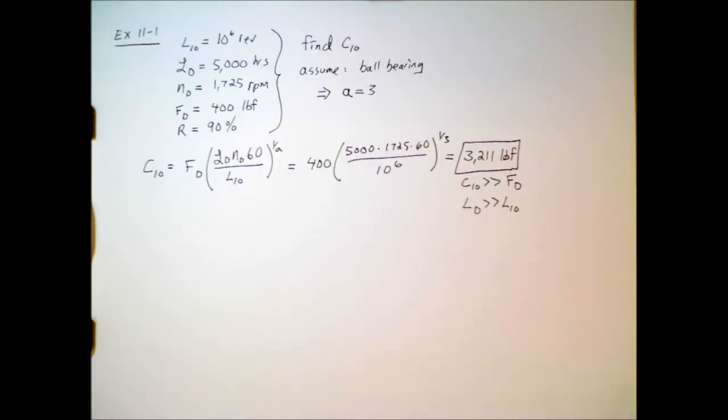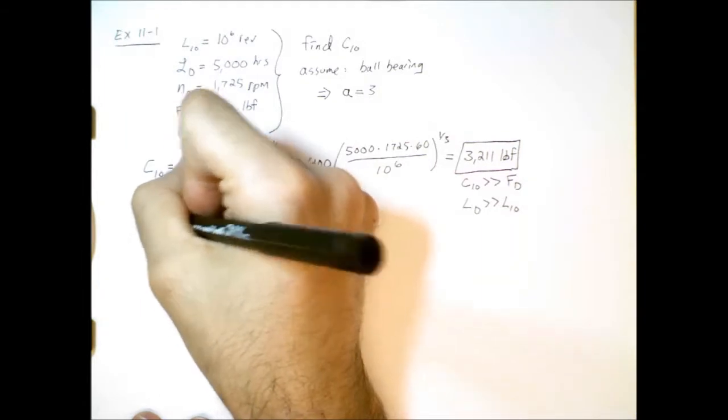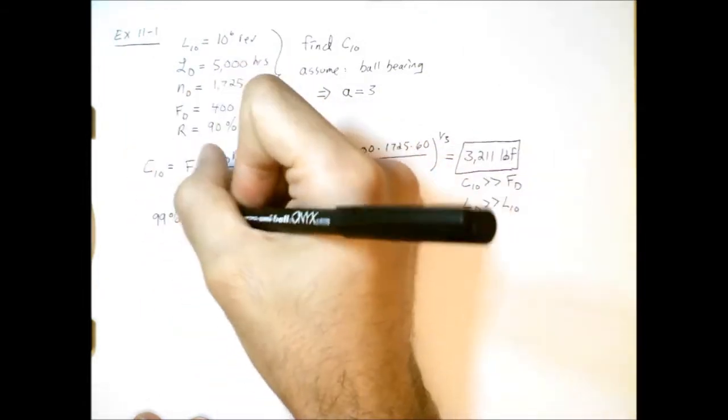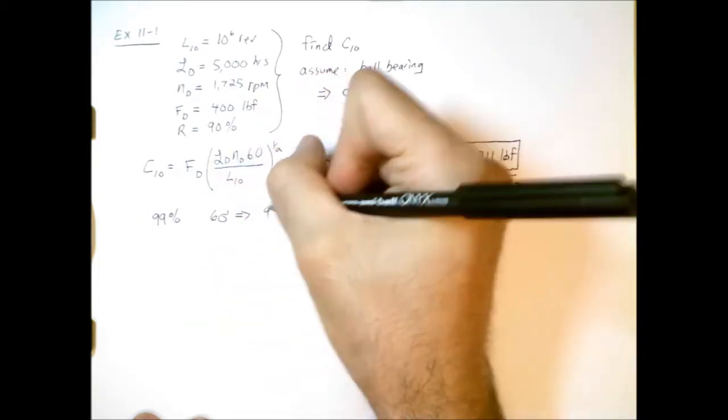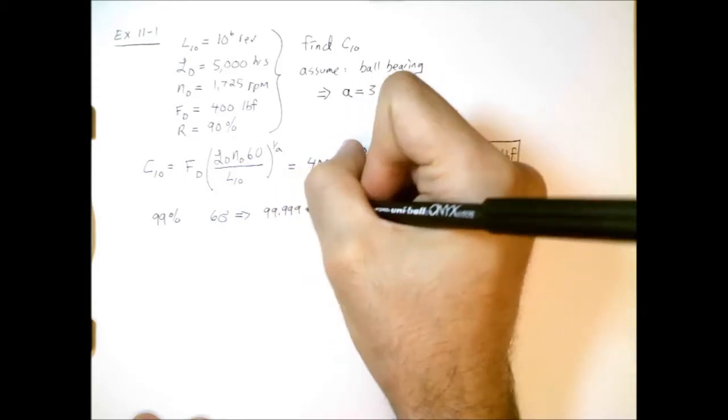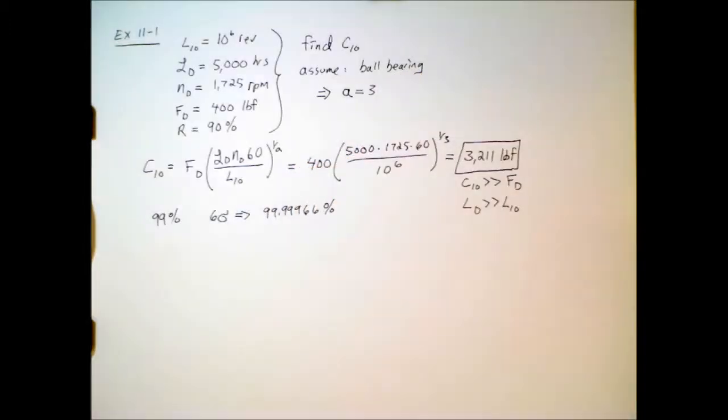In many cases we need a reliability value that's different from 90%. Maybe we want a 99% reliability value, or maybe we want 6 sigma reliability, which corresponds to 99.9966% reliability. We're going to go through an approach for converting between 90% reliability and other values of reliability, and also incorporate ways of changing between different values of force and life, too.